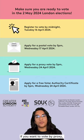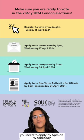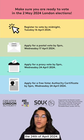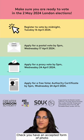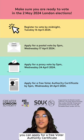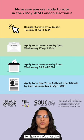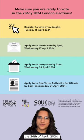If you want to vote by proxy, you need to apply by 5pm on Wednesday the 24th of April 2024. Check you have an accepted form of valid Voter ID to vote in person. If you don't, you can apply for a free Voter Authority Certificate by 5pm on Wednesday the 24th of April 2024.